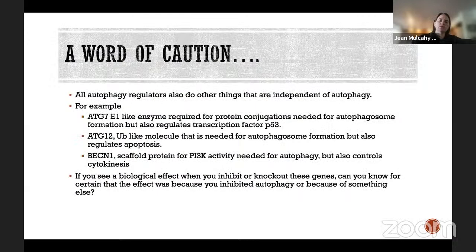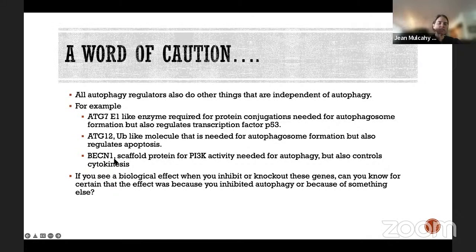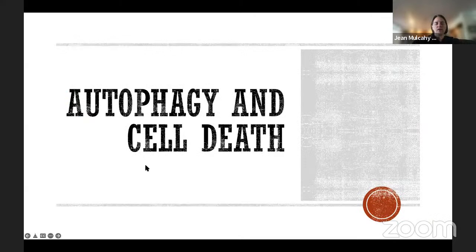ATG genes regulate other cellular processes beyond autophagy, which must be considered when targeting them. ATG7 is an E1-like enzyme required for protein conjugation but also regulates transcription factor p53. ATG12 is ubiquitin-like and helps regulate apoptosis. Beclin-1, the scaffolding protein in the PI3-kinase complex, also controls cytokinesis. So when inhibiting or inducing any of these, you need to think about what else you might be affecting.